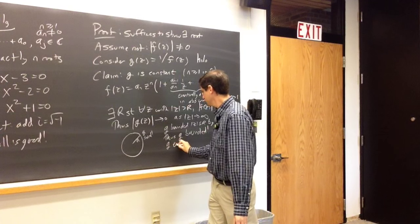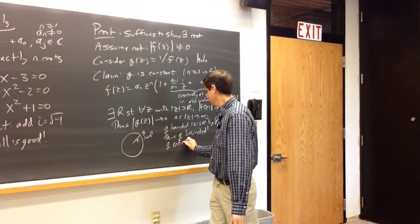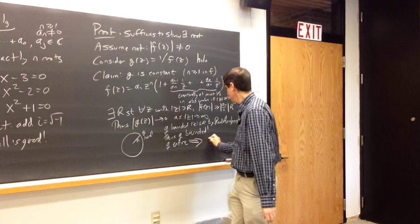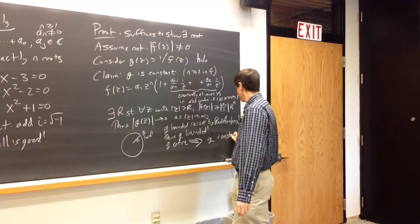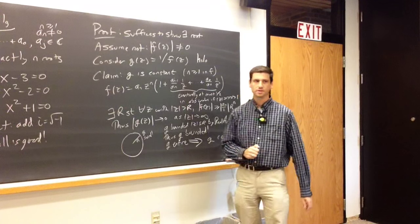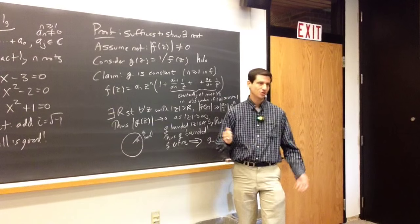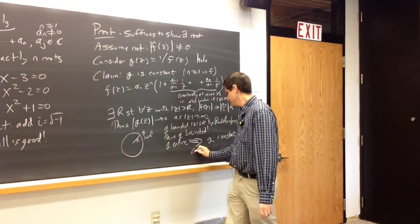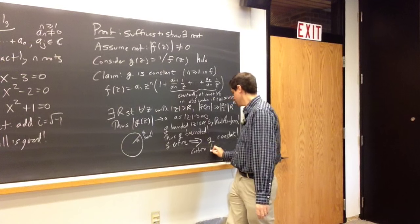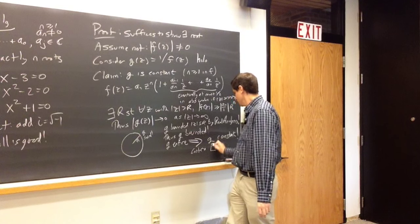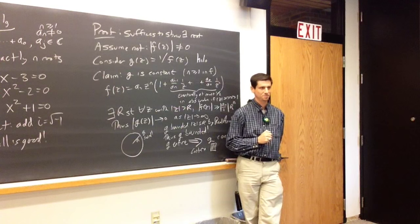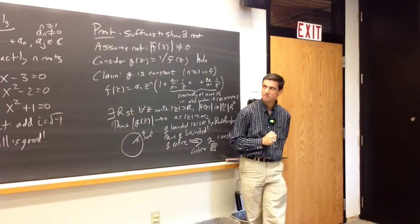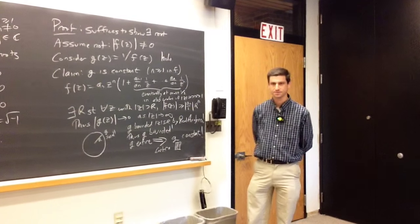Thus g is bounded. g is entire. Therefore g is constant — but g is not constant. Contradiction.